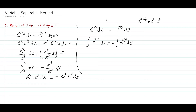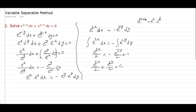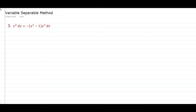Integral of e power 2x dx is e power 2x by 2, equal to minus integral of e power 2y dy, which is minus e power 2y by 2, plus c. Bringing the minus term to the left side, it becomes e power 2x by 2 plus e power 2y by 2 equal to c.